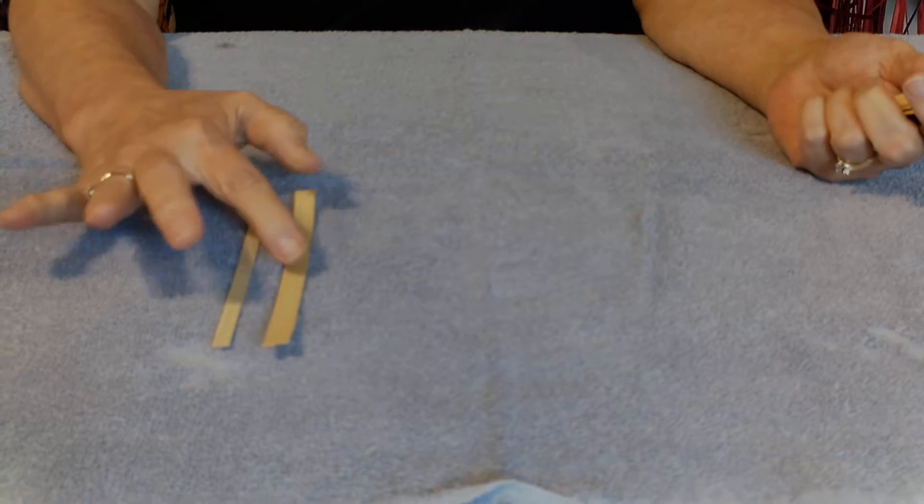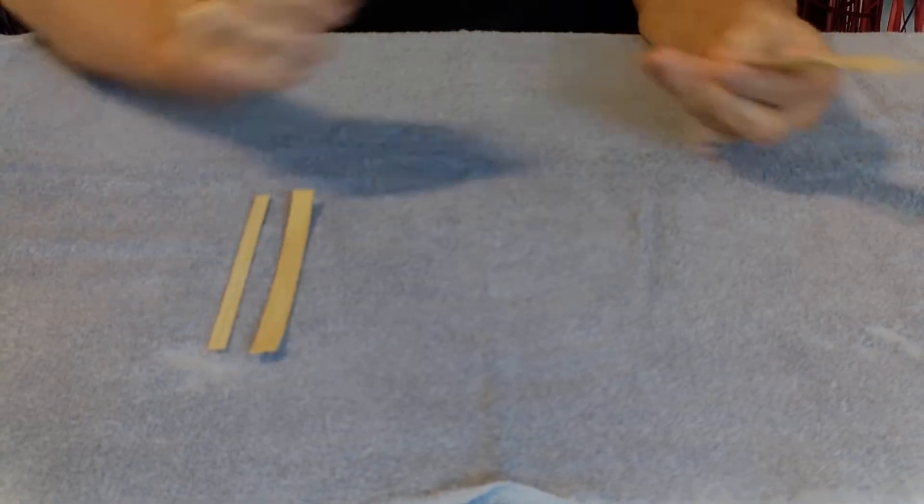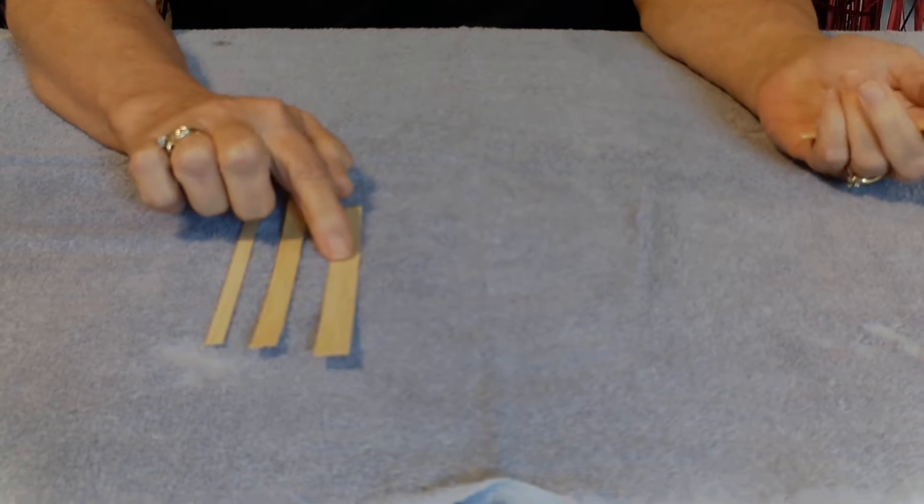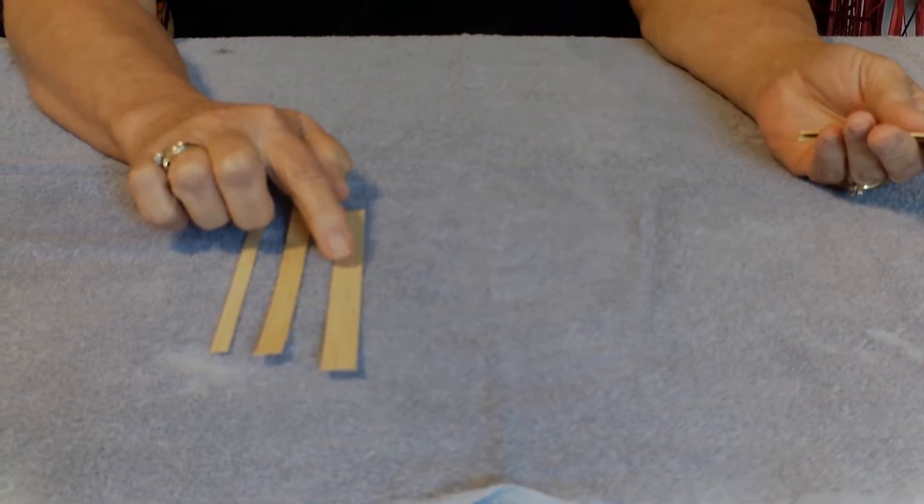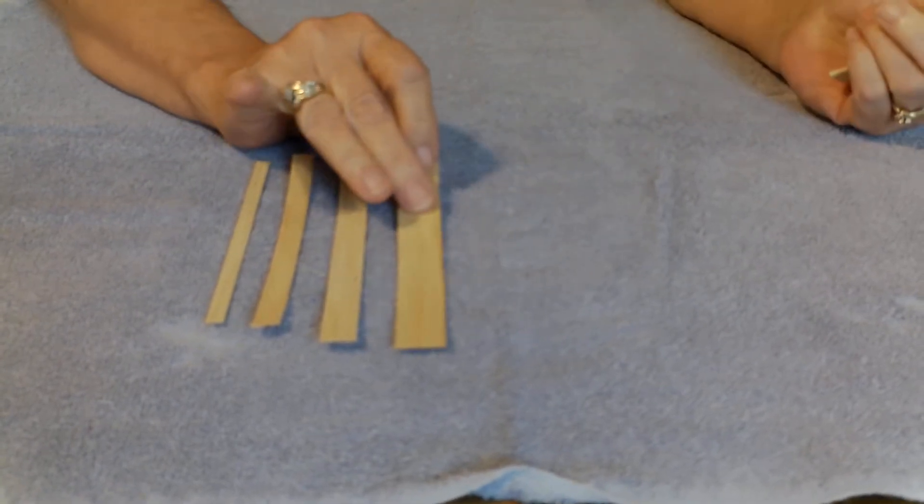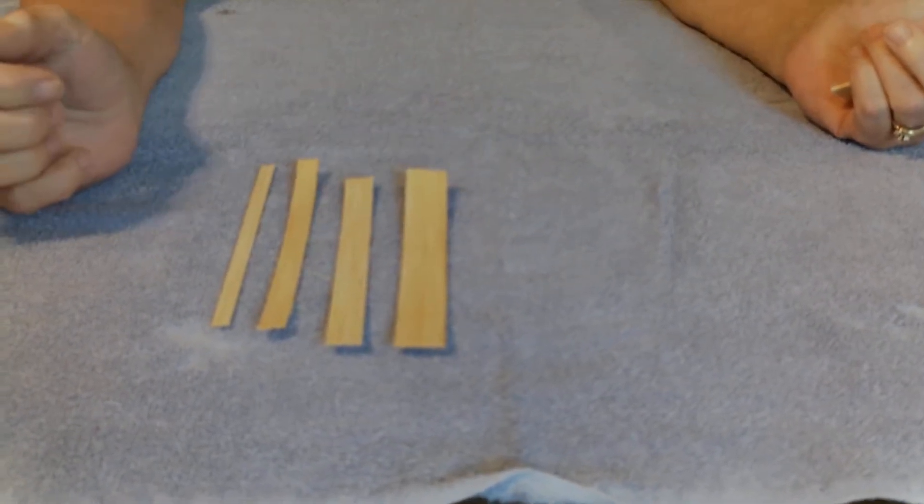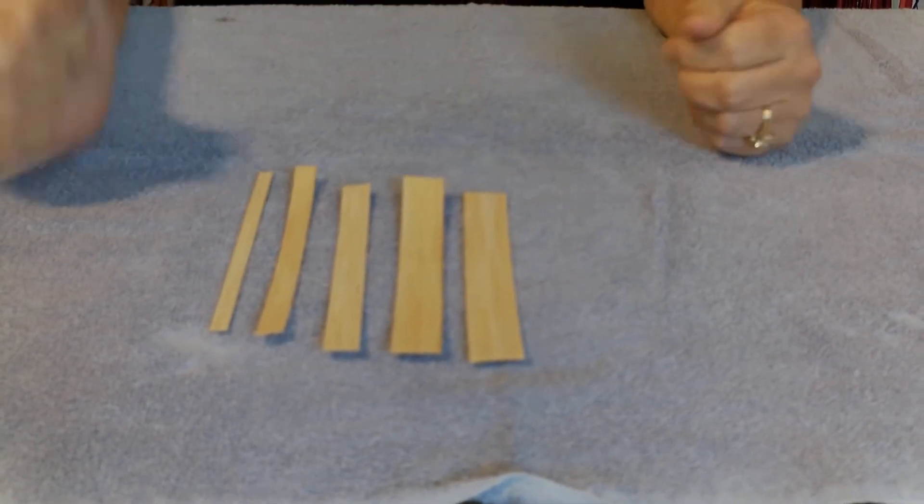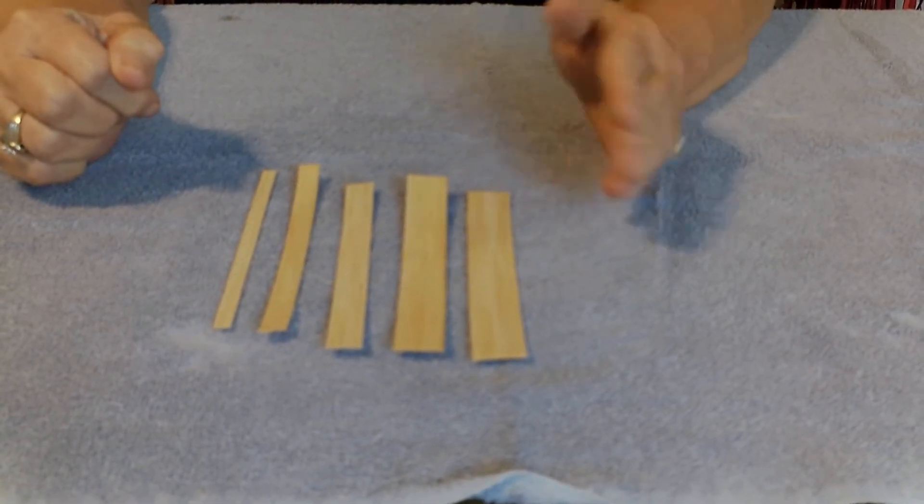This is 3-8ths of an inch. This is half inch, which is the size that was in the coil that I showed you. This is 5-8ths of an inch, and this is 3-quarters of an inch. There is one more size up, which is one inch.